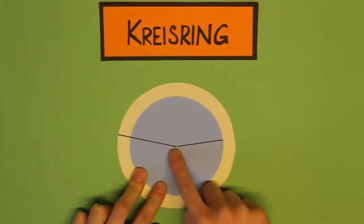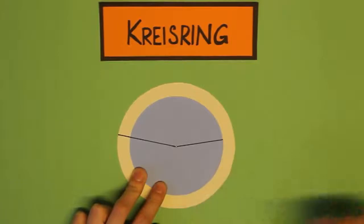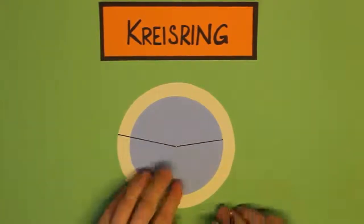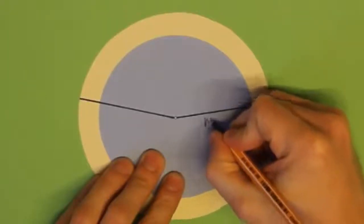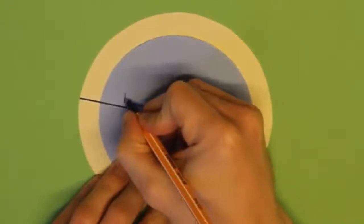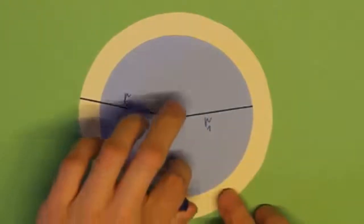Die Radien sind natürlich, wie ihr sehen könnt, unterschiedlich groß. Und wir bezeichnen den kurzen Radius vom blauen Kreis jetzt einfach mal mit R1. Und den langen Radius vom gelben Kreis nennen wir R2.